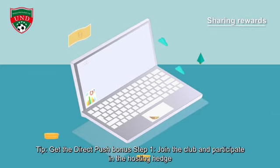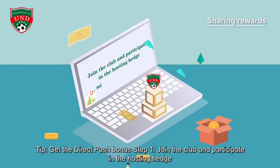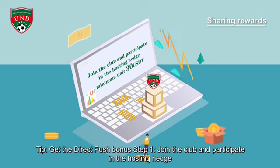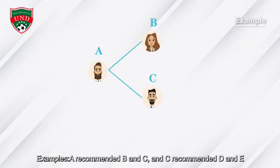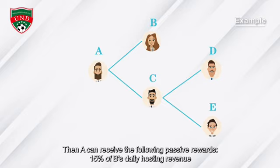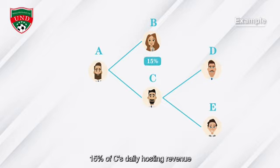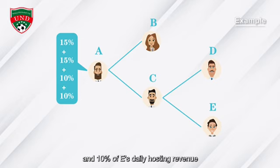To get the direct push bonus: join the club and participate in the hosting hedge with a minimum unit of 30 USDT. For example, A recommends B and C, and C recommends D and E. Then A can receive: 15% of B's daily hosting revenue, 15% of C's daily hosting revenue, 10% of D's daily hosting revenue, and 10% of E's daily hosting revenue.